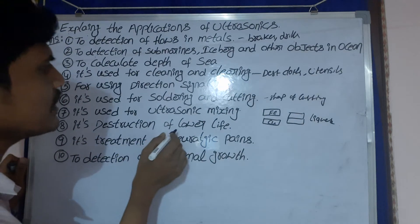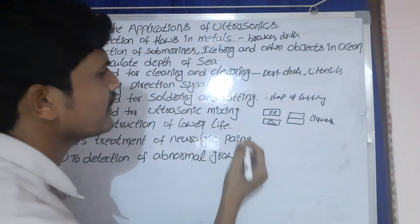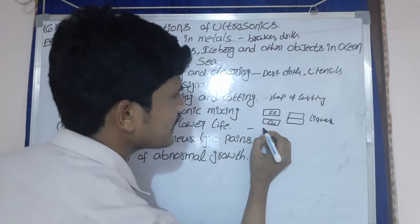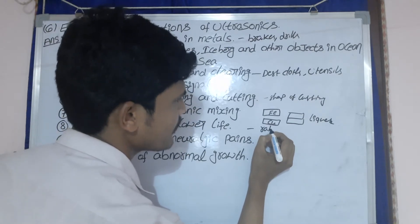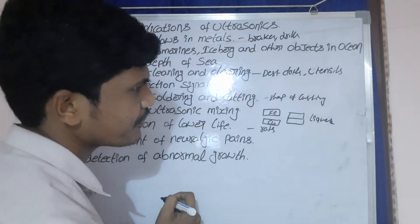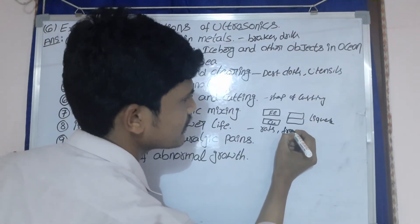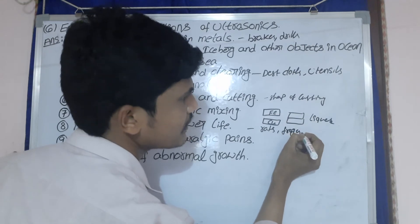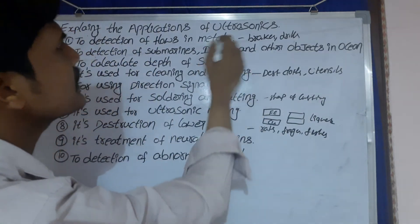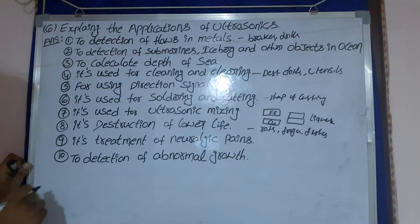Next one: it is used for destruction of lower life forms. Lower life means small organisms, for example rats, frogs, and fishes. These are destroyed using ultrasonic waves.